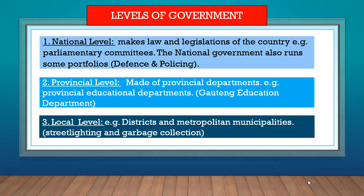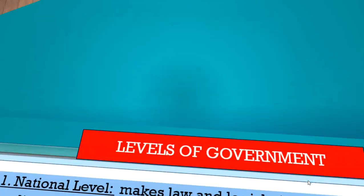The last level of government, the lower level, is the local level. These are the districts and the municipalities. They're in charge of services such as street lighting or garbage collection.